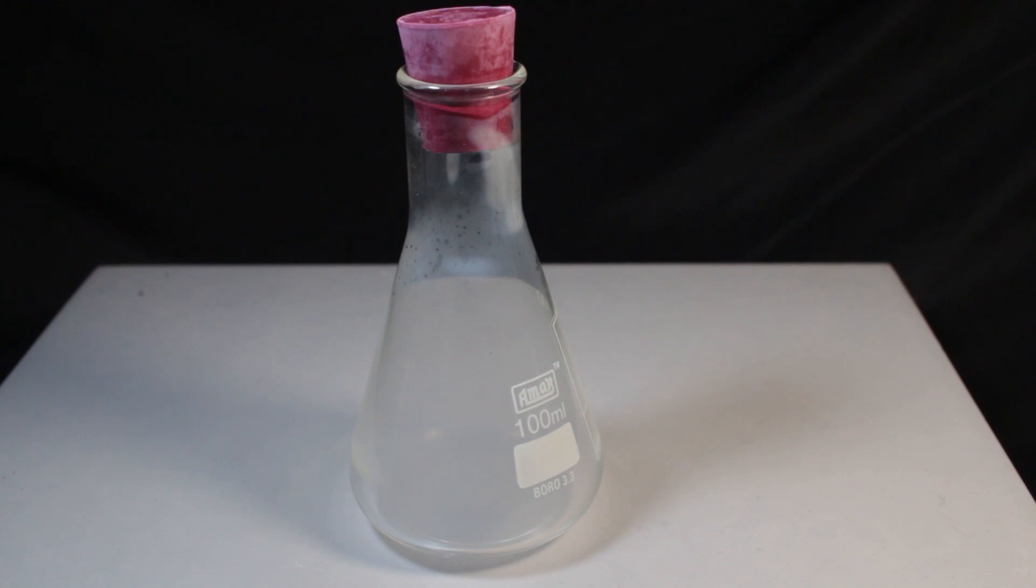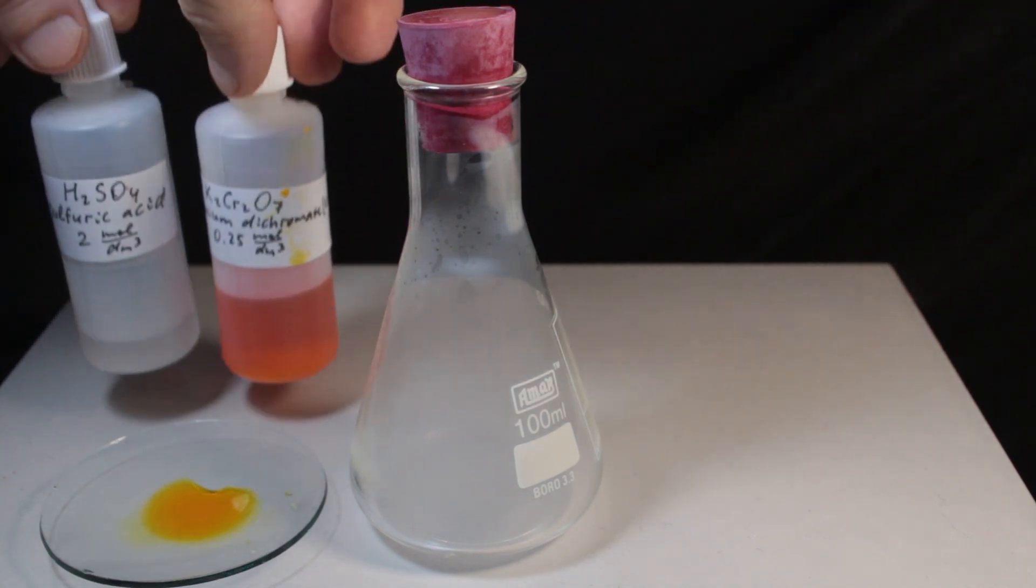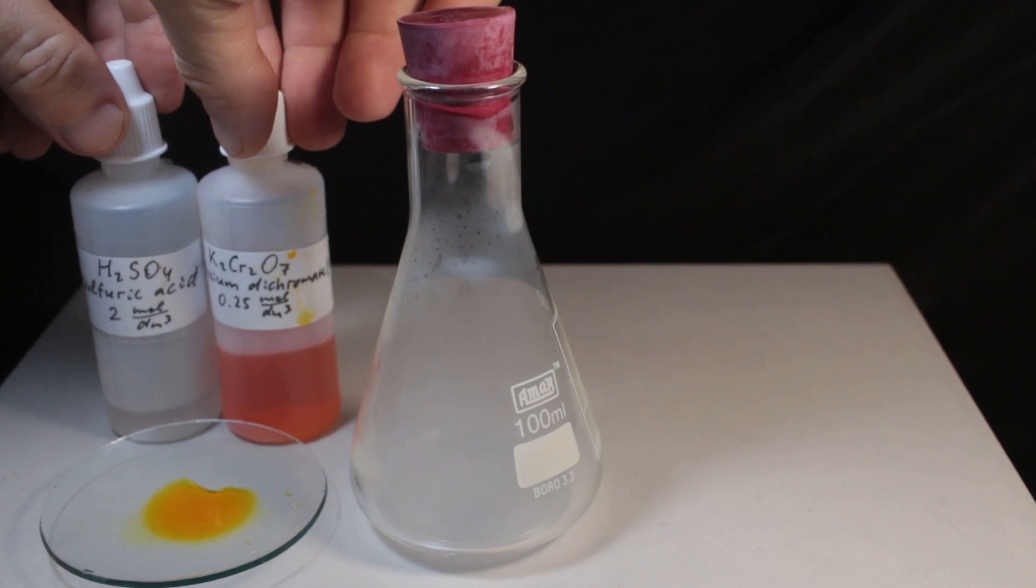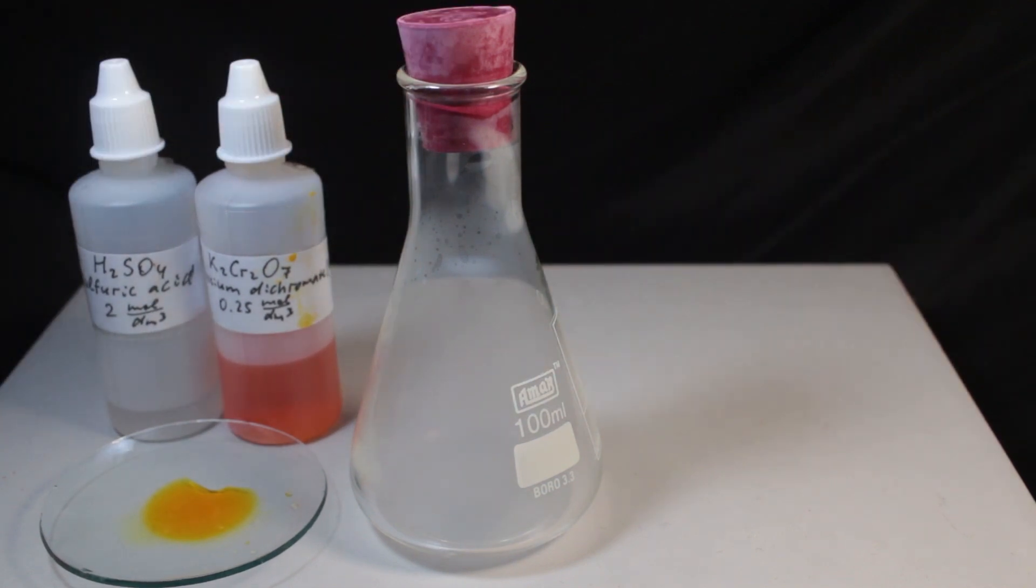Now for other properties, first reducing one. For that we need oxidizing agent, which changed color on reduction. This is acidified potassium dichromate. It's prepared by mixing these two liquids. Potassium dichromate solution and sulfuric acid.